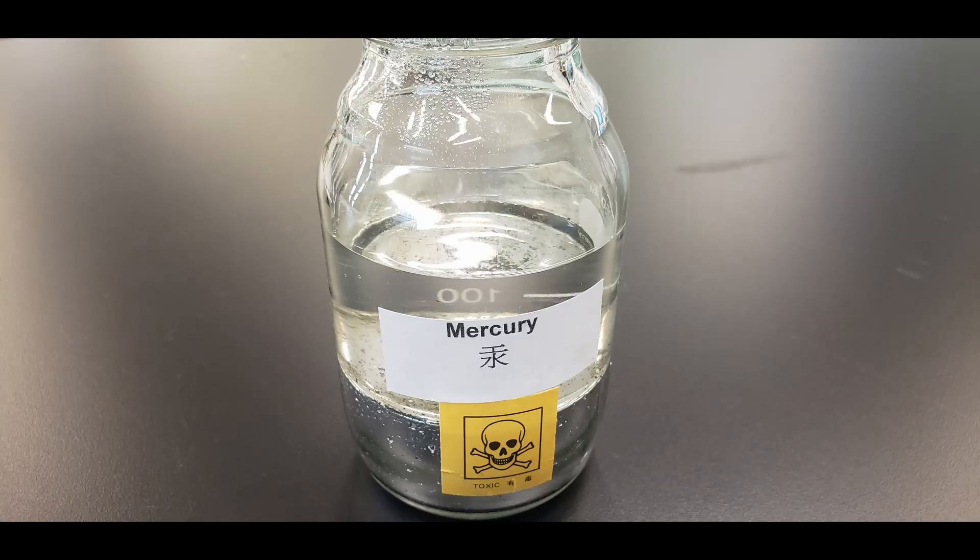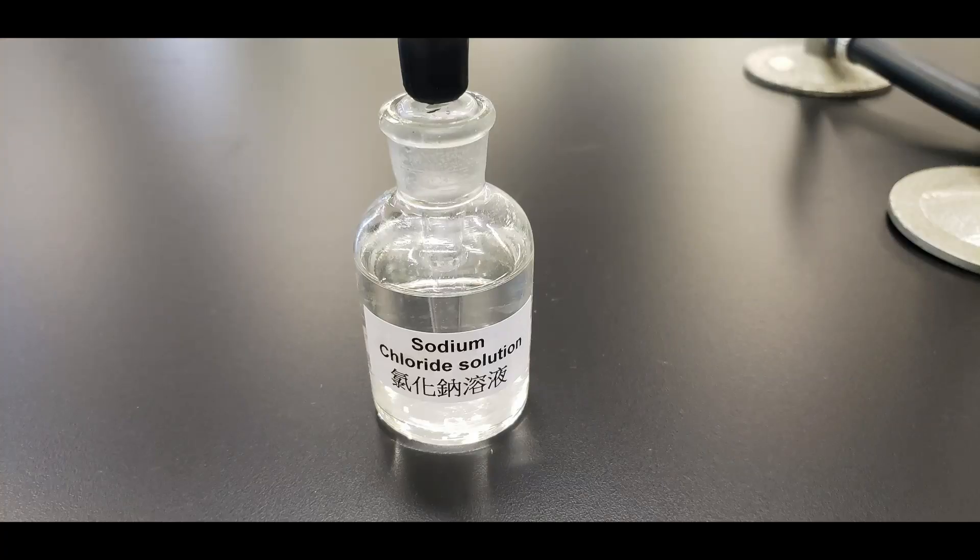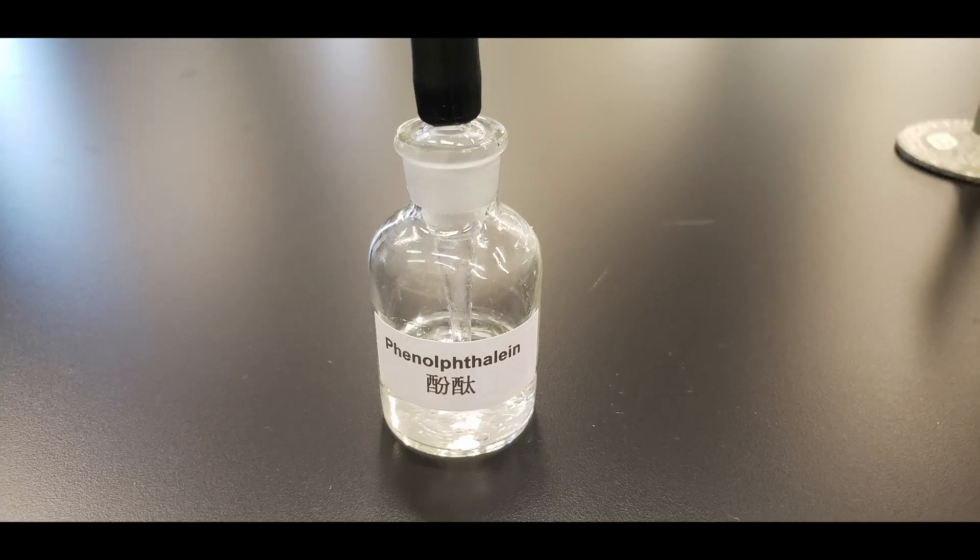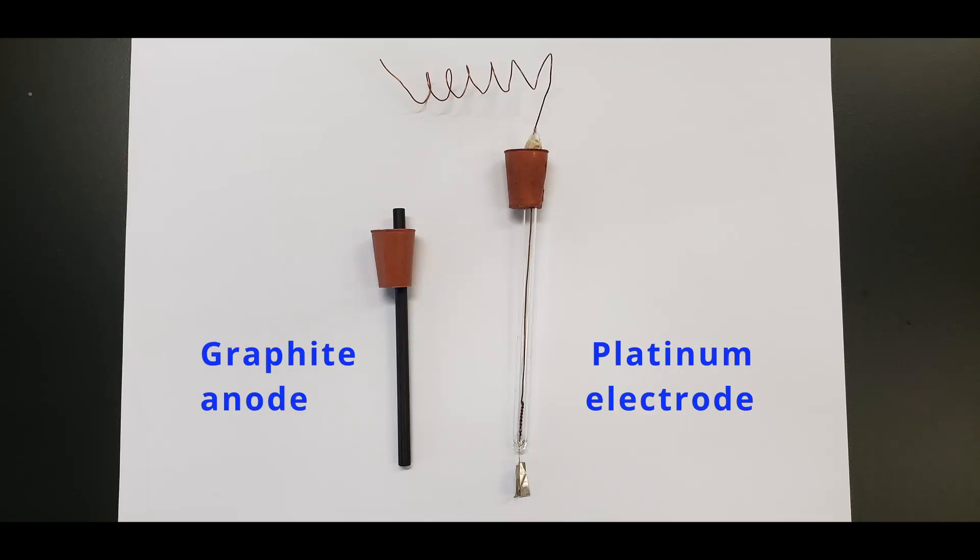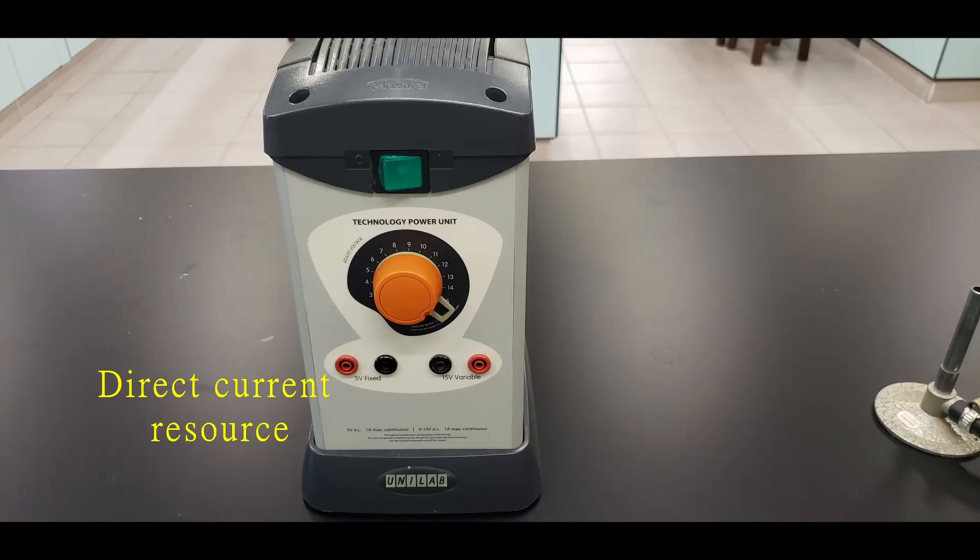Apparatus and chemicals used include mercury, concentrated sodium chloride solution, phenolphthalein, U-tube, graphite anode, platinum cathode, and a power pack is used.